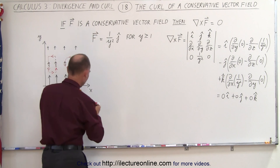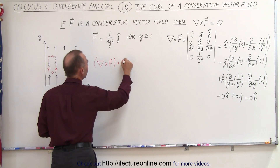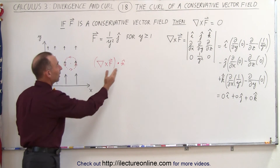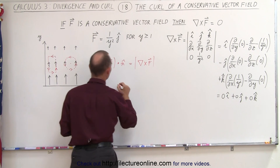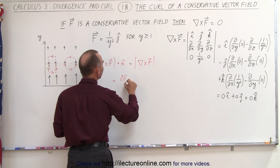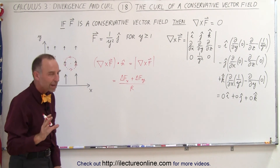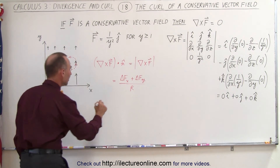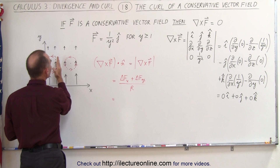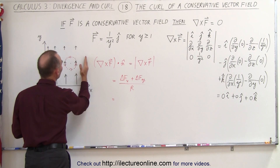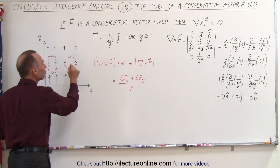We can also take the curl of the vector field and dot it with the normal to the plane of the vector field — which is parallel to the curl — to get the magnitude of the curl. We've learned this equals the change in the vector field when moving in the x direction plus the change in the vector field when moving in the y direction, divided by the distance of the change. Pay special attention here: the magnitude in the y direction remains constant as I change in the x direction. The change is therefore equal to zero.